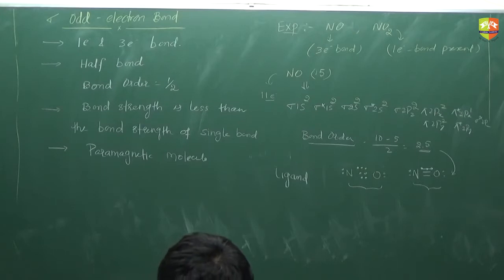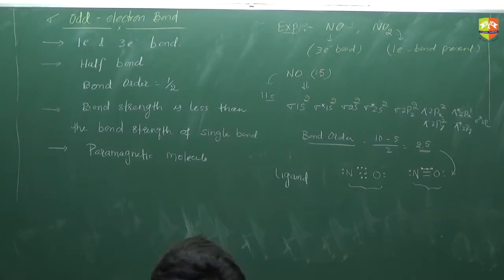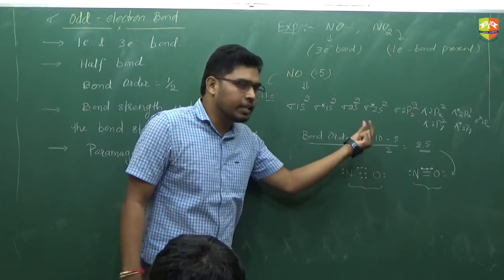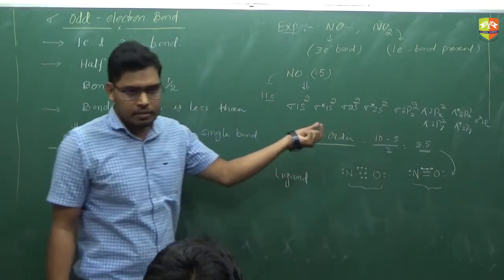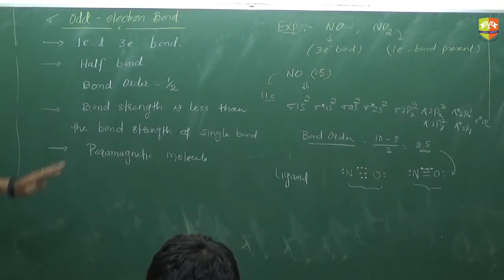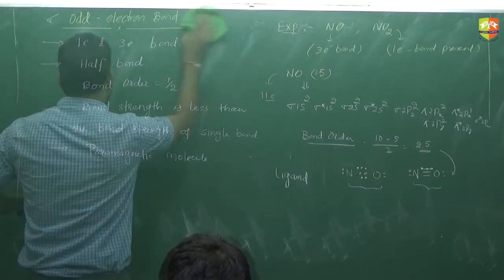NO is called nitrosyl, and NO⁺ is called nitrosonium or nitrosylium. This comes up in coordination chemistry. The key point: when bond order has a 0.5 component, it is purposeful — it means there is an odd electron bond. NO has a 3-electron bond; NO₂ has a 1-electron bond.